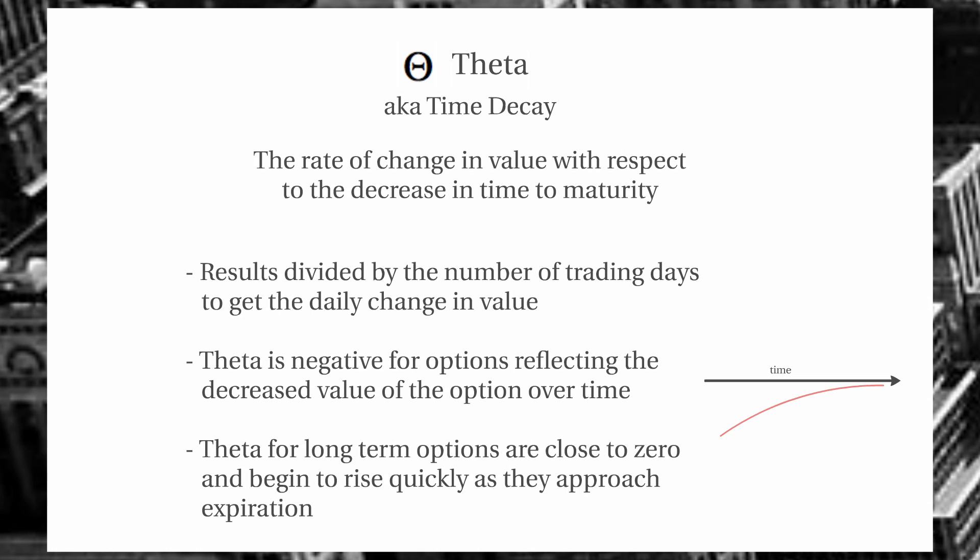Next we have theta, which is the amount that the option value will change with respect to the decrease in time to maturity. This is measured in days, so we take our results and divide by the number of trading days to get the daily change in value of the option over time. Theta is negative, so we're constantly losing value in our option as we get closer to expiration. Theta is very small — close to zero — when we're far away from expiration. With a one-year LEAP, for example, it will lose very little value in the first days, but that loss in value will increase rapidly as we get closer to the expiration date.